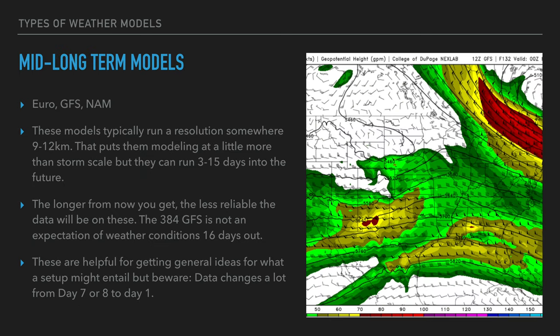Now the mid and long-term operational models — single runs, not ensembles — include the Euro, GFS, and NAM. They run at resolutions between 9 and 12 kilometers, so they're not modeling individual storms but they do run several days into the future. The GFS runs 15 days out. I don't take storm systems very seriously until they're within a week or so. The 384-hour GFS is not a literal expectation of weather 15–16 days out.